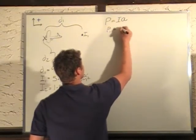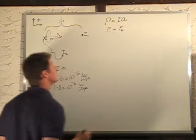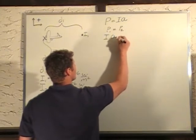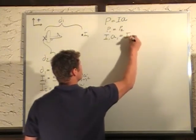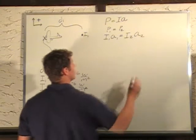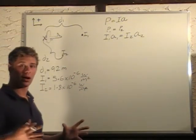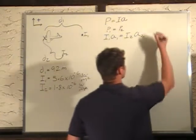Power 1 equals power 2, which means that the intensity 1 area 1 equals the intensity 2 area 2. Now the area of a shell, the area of a sphere, is 4 pi r squared.